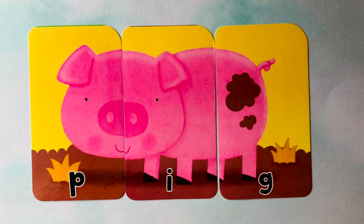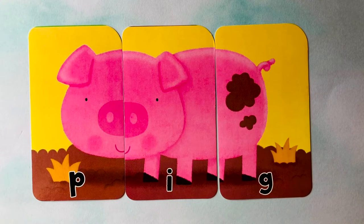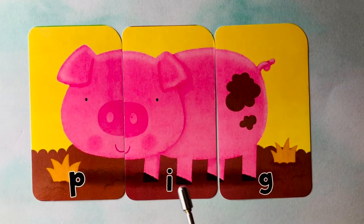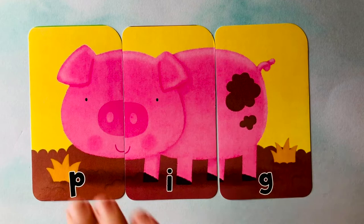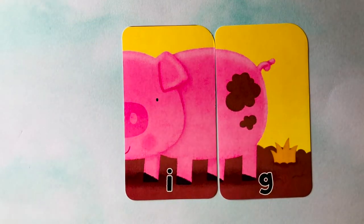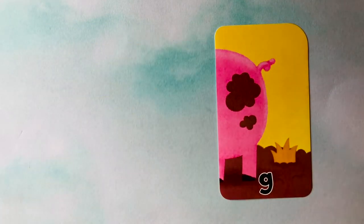Can you spell it one more time with me? Pig is spelled P-I-G. Awesome job. Let's get rid of the P. Adios, I. See you later, G.